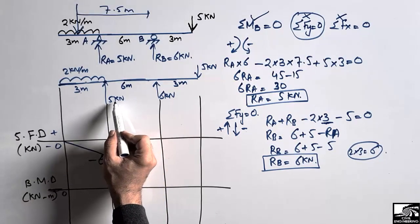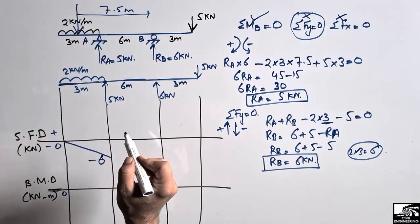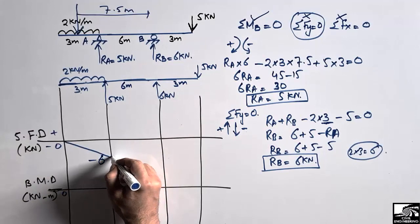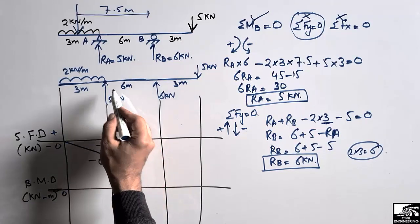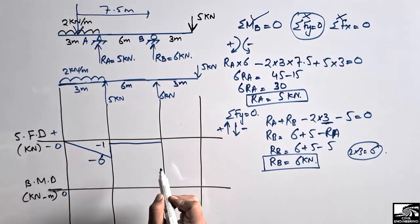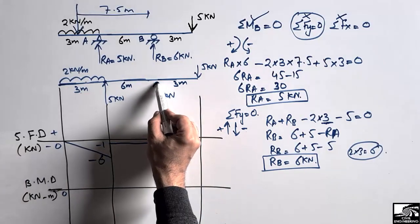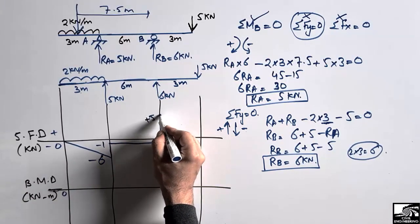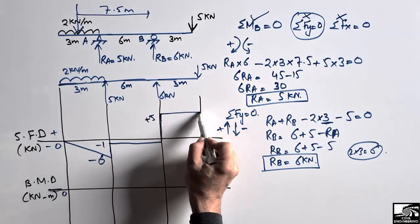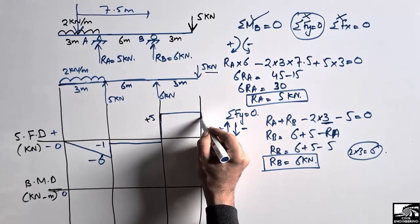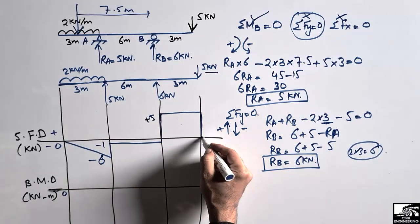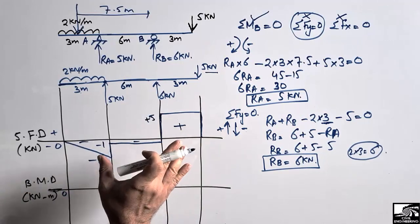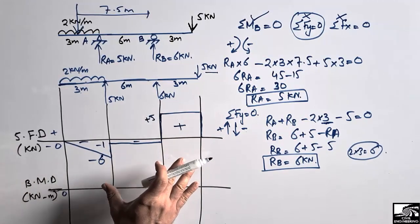We have an upward reaction of 5 kN, so it moves up: −6 + 5 = −1. There is no load over the next distance, so it remains a straight line at −1. Then there is RB of 6 kN acting upward — also positive — so −1 + 6 = +5. There is no load on this portion so it stays a straight line, and then the 5 kN point load acts downward, bringing it back to zero. This completes the shear force diagram — positive portions are above the reference line and negative portions below.